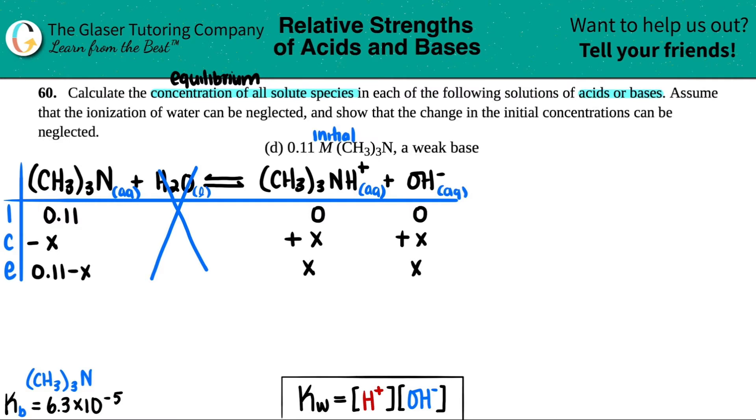These are the values we're going to plug into our Kb formula because we're working with a base. Kb equals, remember, if you have two products, they're multiplied by each other, and then we have one reactant because no liquids allowed. So CH₃₃NH plus times OH minus over CH₃₃N.